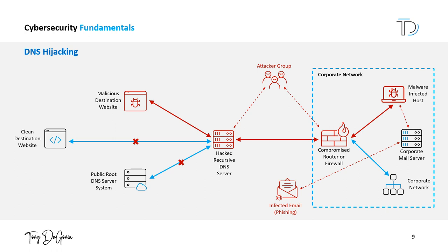When a user attempts to access a legitimate website, the user's computer or router will use the altered DNS settings to direct traffic to a different IP address, potentially exposing the user to malware or phishing attacks. Preventing DNS hijacking requires proper configuration and maintenance of routers and DNS servers, including using strong passwords, keeping software up to date, and monitoring for suspicious activity. It's also important to use DNS service providers that offer secure services such as DNSSEC, and to be aware of indicators of DNS hijacking, such as changes in DNS settings or redirects to unexpected websites.